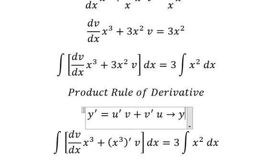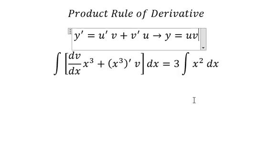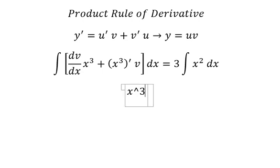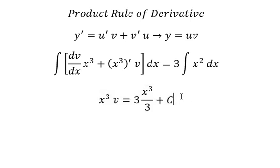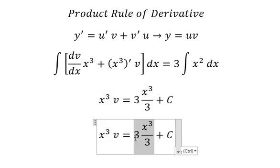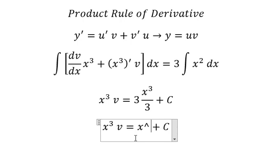This one you will have x to the power of 3 times v. The integration of x square, we have x to the power of 3 over 3 plus C. We have x to the power of 3. After that, we divide both sides by x to the power of 3.